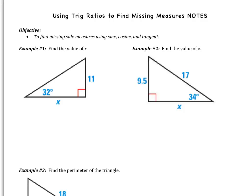Hello geometers, welcome to our second trig video. Today's notes are about using trig ratios to find missing measures, so missing sides. We only have one objective: we're going to find missing side measures using sine, cosine, and tangent.